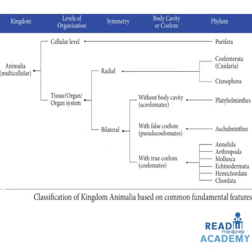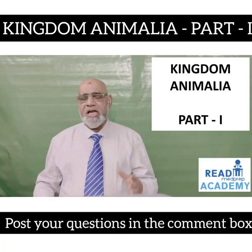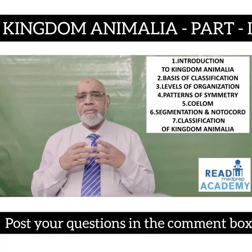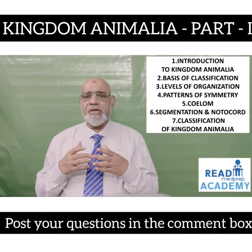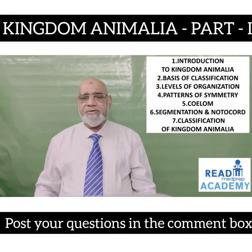Here you can see the classification of Kingdom Animalia based on common fundamental features. Kingdom Animalia are all multicellular organisms. Based on levels of organization: cellular level — example phylum Porifera; tissue, organ and organ system levels for higher organisms. Organisms with radial symmetry include phylum Cnidaria and phylum Ctenophora. Based on bilateral symmetry, they include acoelomates without body cavity — example Platyhelminthes; pseudocoelomates with false coelom — example phylum Aschelminthes; and coelomates with true coelom — example Annelida, Arthropoda, Mollusca, Echinodermata, Hemichordata and Chordata. Today in Kingdom Animalia Part 1 we discussed the introduction, basis of classification, levels of organization, patterns of symmetry, coelom, segmentation and notochord, and classification of Kingdom Animalia.